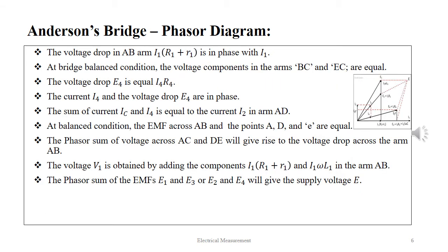The voltage drop in AB arm, I1 into capital R1 plus small r1, is in phase with the current I1.